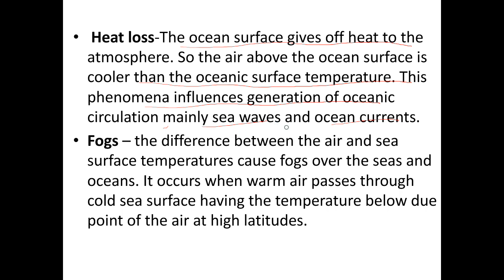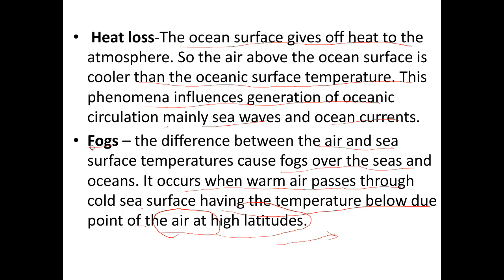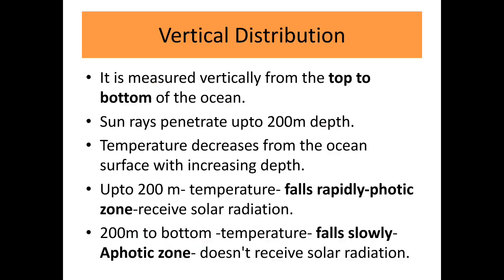This phenomenon influences the generation of oceanic circulation, mainly sea waves and ocean currents. The difference between air and sea surface temperatures causes fog over the seas and oceans. Fog occurs when warm air passes through the cold sea — if the air has a temperature below the dew point when passing over the cold sea, fog forms. At high latitudes, fog commonly occurs on the sea surface.